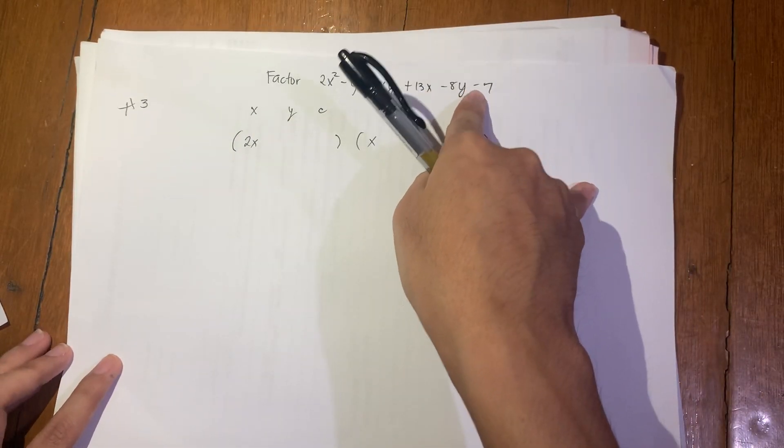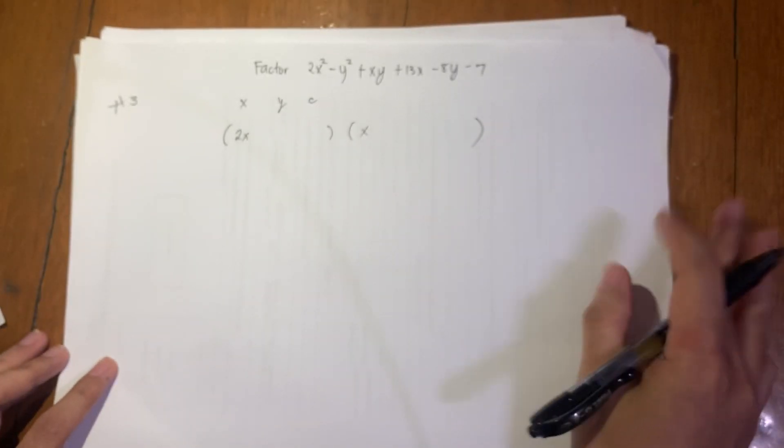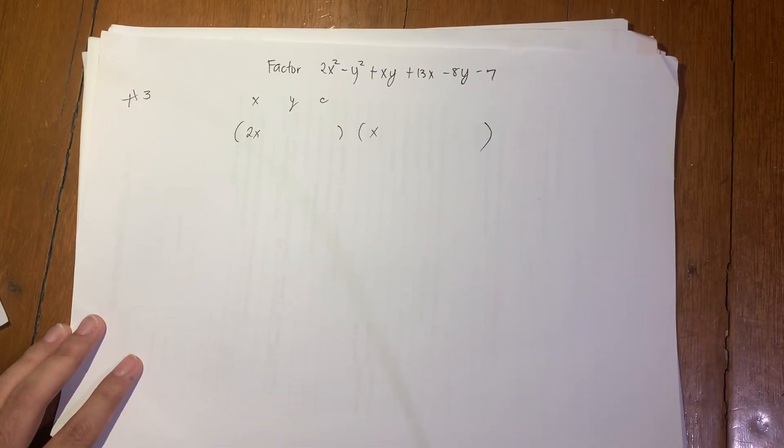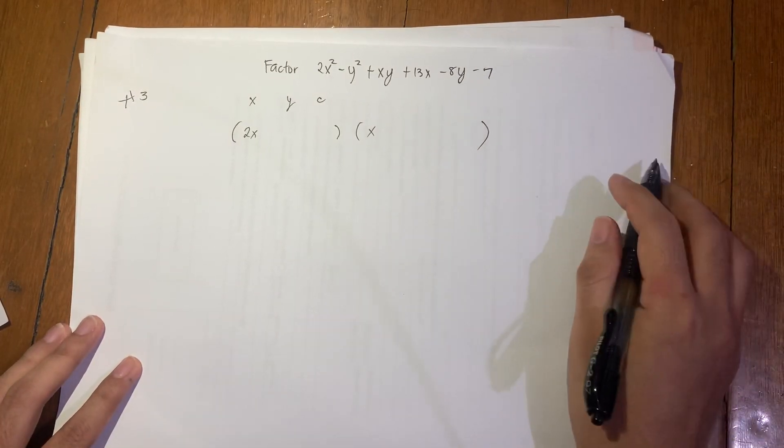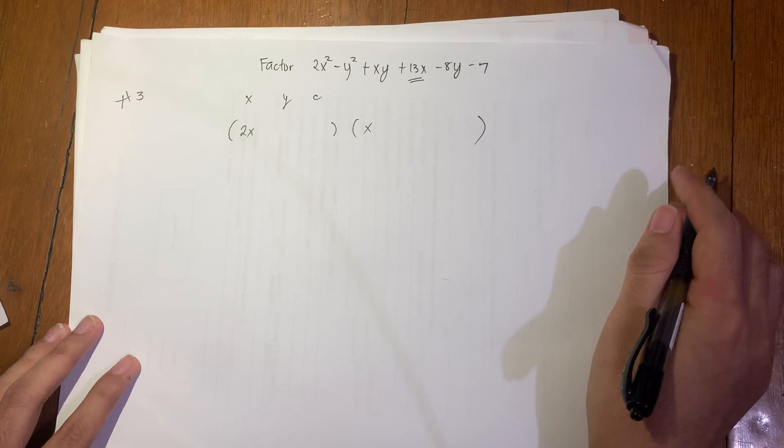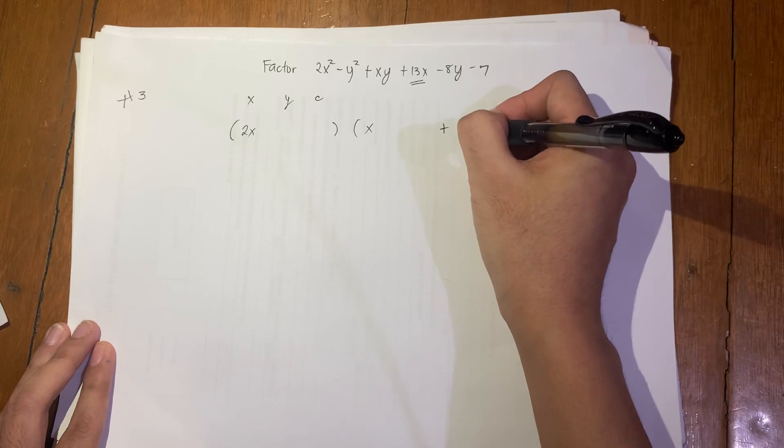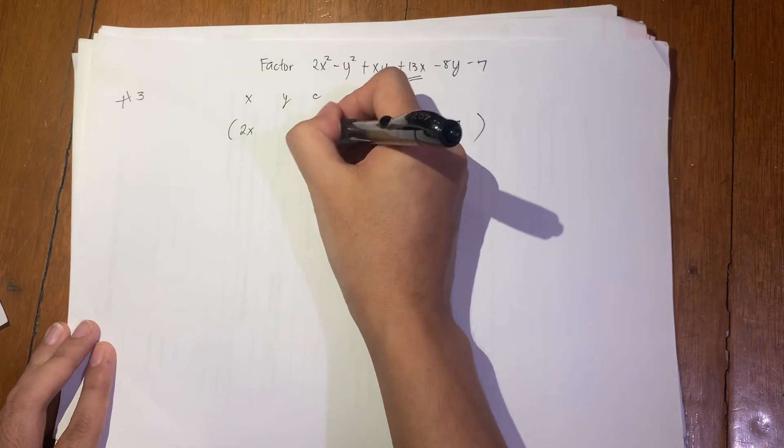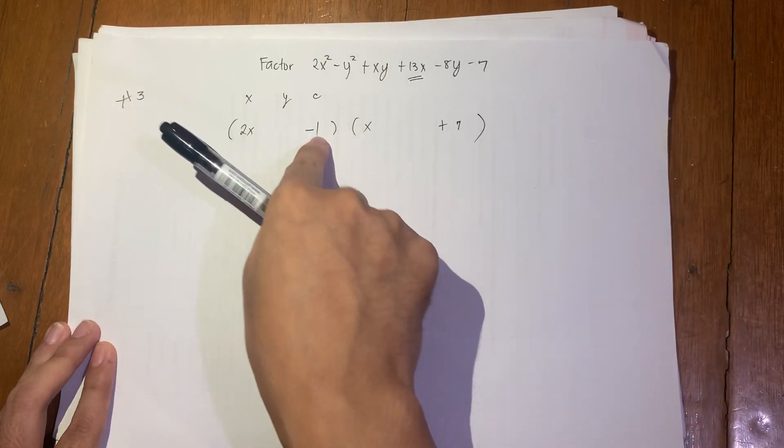So this first term is 2x squared, so we can factor it as 2x times x. We're sure of that because there's no other way to go about it. And then the last term is negative 7, so the only factors of negative 7 are 7 times negative 1 or negative 7 times 1. So the question is, which of those factors should we use? To check that, we need to look at the given. The given coefficient of x is 13, so we want the coefficient of x to be positive.